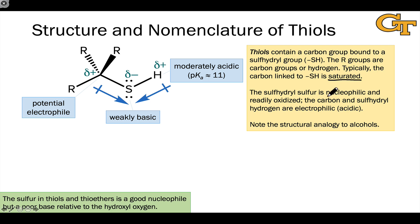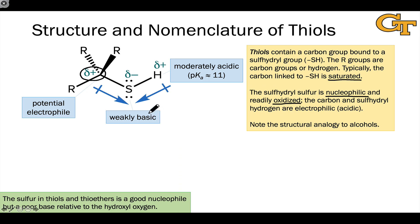Just like the hydroxyl oxygen, the sulfhydryl sulfur has the potential to act as a nucleophile by donating a pair of electrons to an electrophile. But importantly, it's also readily oxidized, so that sulfur readily forms bonds with oxygen. As we saw for alcohols, the carbon linked to the sulfur has the potential to act as an electrophile. Generally, the sulfhydryl group is not a good leaving group on its own, but if we can convert it to a good leaving group — for example, by protonating it — this carbon has the potential to accept electrons from a nucleophile.